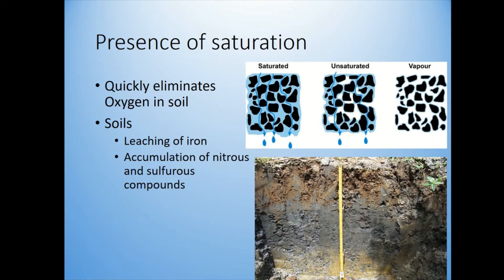In anoxic conditions you get a continuous leaching of nutrients — iron gets leached out, giving the soil that gray gleyed color, with little rusty spots where plant roots bring oxygen down and make iron available again. You also get accumulation of nitrous and sulfurous compounds. That's why when you step in wetland muck you get that rotten egg smell — it's hydrogen sulfide being created in the anoxic environment.